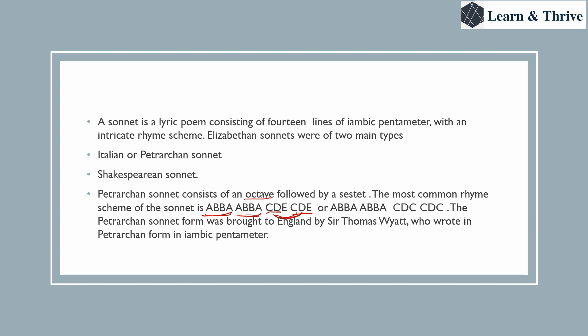The most common rhyme scheme of the Petrarchal sonnet is a b b a a b b a c d e c d e, or a b b a a b b a c d c c d c. So there is an octave followed by a sestet. The Petrarchal sonnet form was brought to England by Sir Thomas Wyatt, who wrote in Petrarchal form in iambic pentameter — that is how the sonnet got introduced in England.